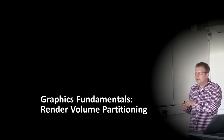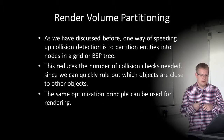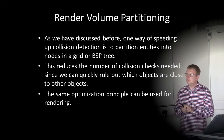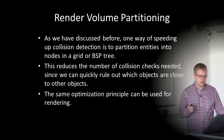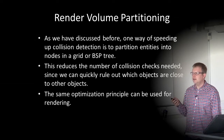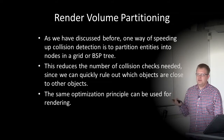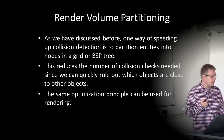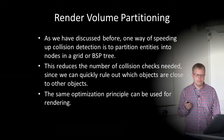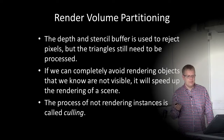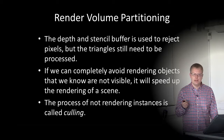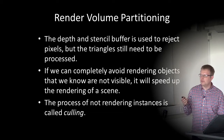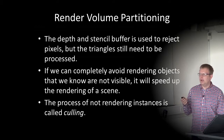Partitioning is also important in rendering — we call it render volume partitioning. One way of speeding up collision detection, as discussed in the previous lecture, is to partition entities into nodes in a grid or using a BSP tree, which reduces the number of collision checks needed. The same optimization principle can be used for rendering. The depth and stencil buffer rejects pixels, but triangles still need to be processed, so if we can completely avoid rendering objects we know are not visible, it will speed up rendering quite significantly.